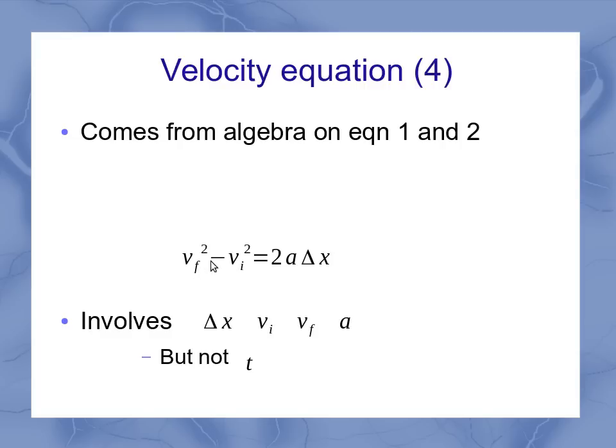then I end up getting this form of the equation. It involves the final velocity squared minus the initial velocity squared, and that's equal to 2 times the acceleration times the displacement.